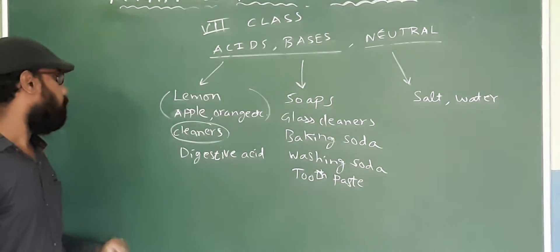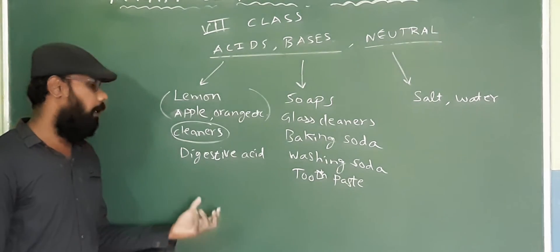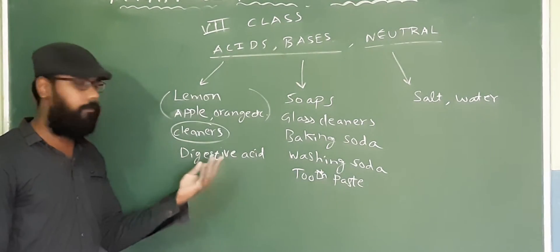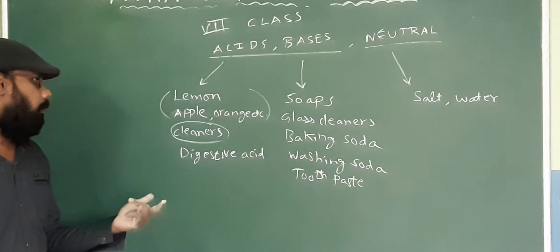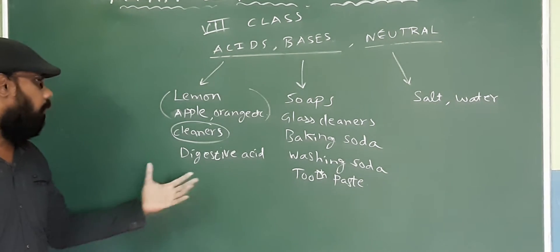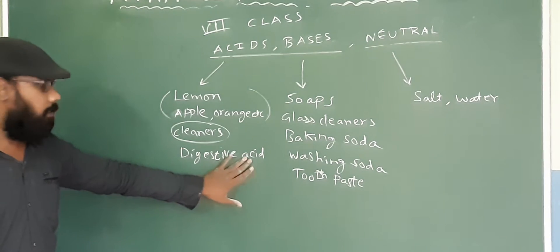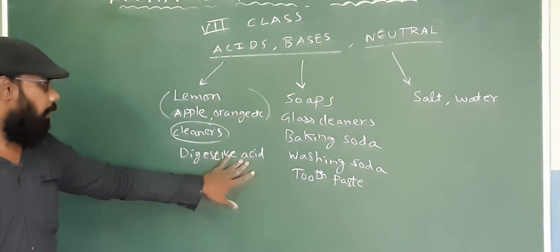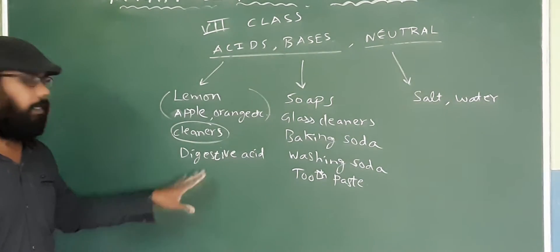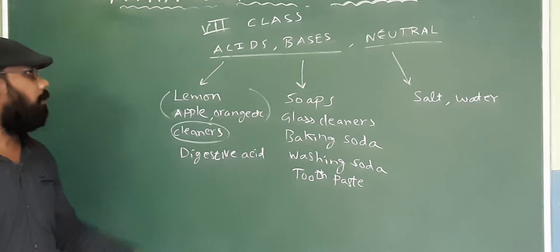Now, if you have some fat to digest, the stomach requires a lot of chemical power. That chemical power is by the acid present in our stomach, which we call digestive acid. So we have a very strong acid in our stomach.